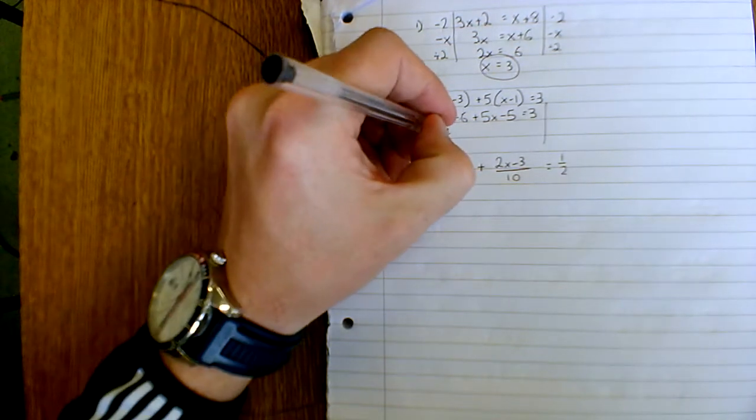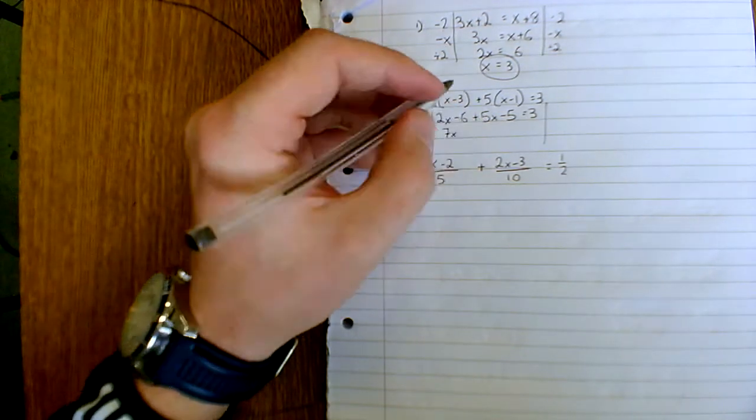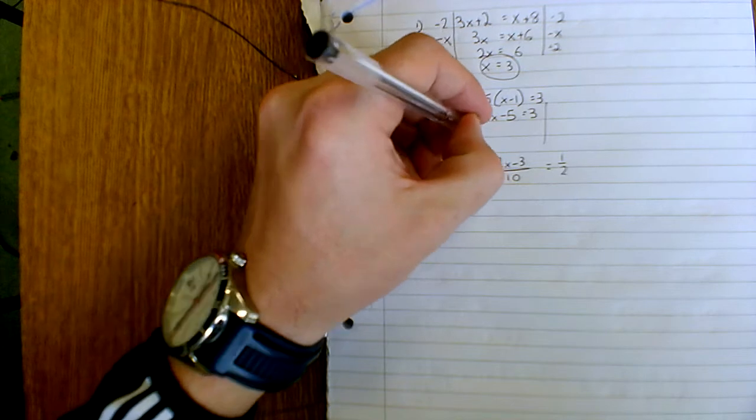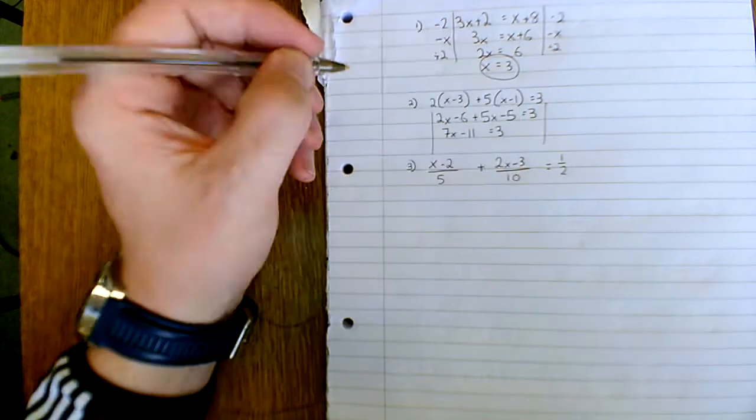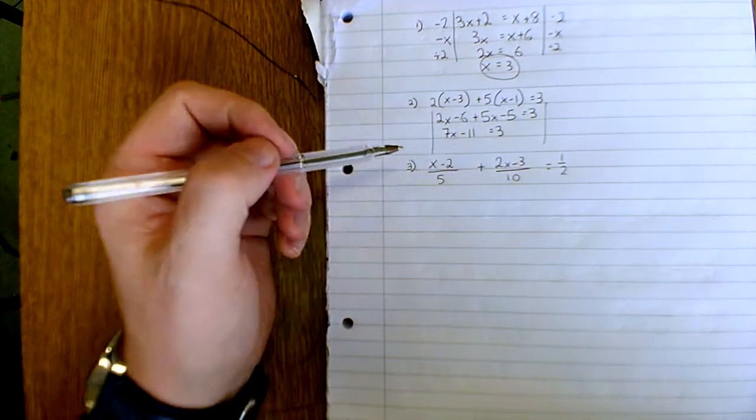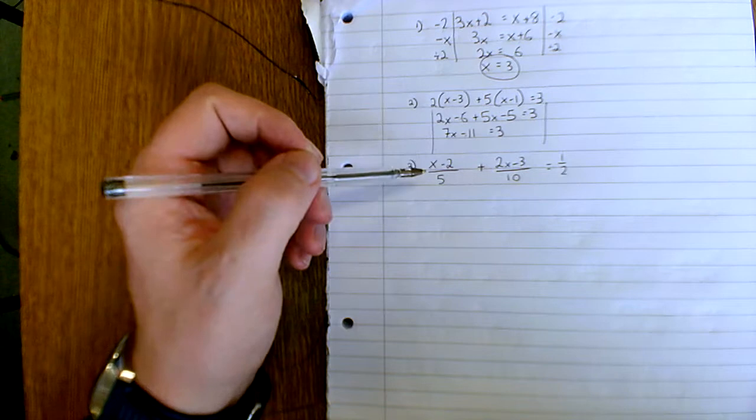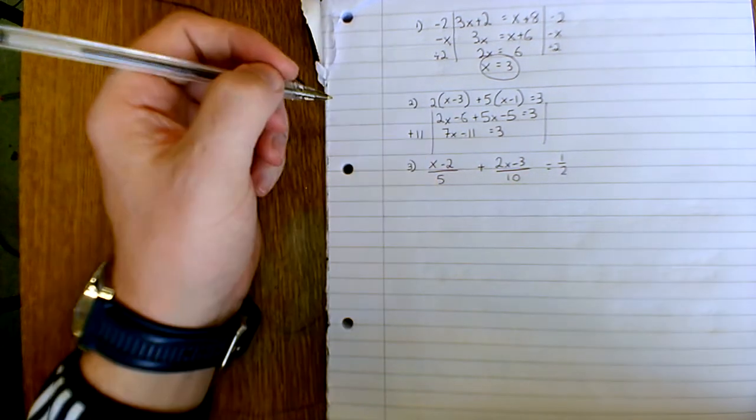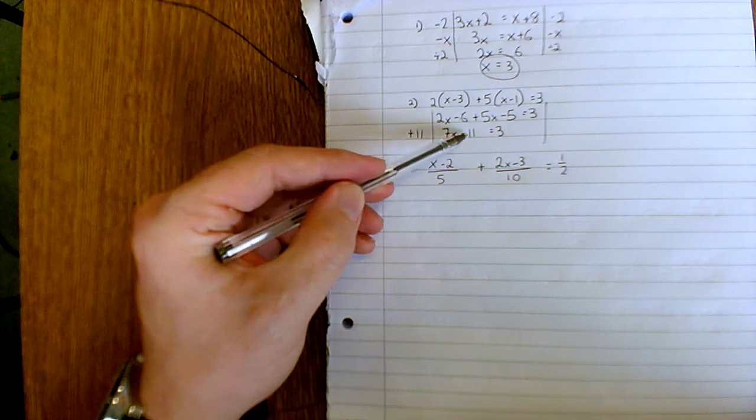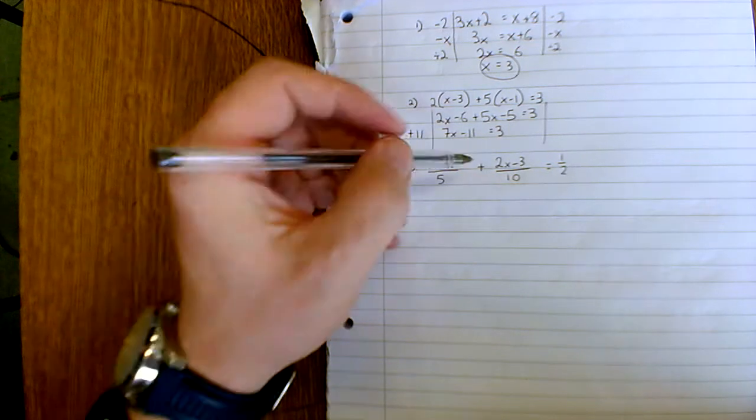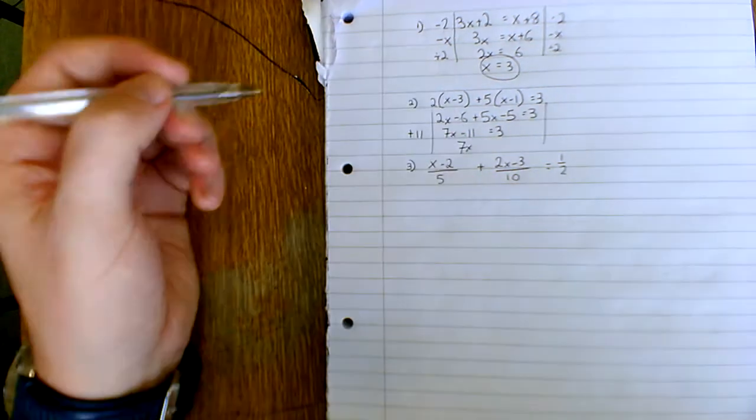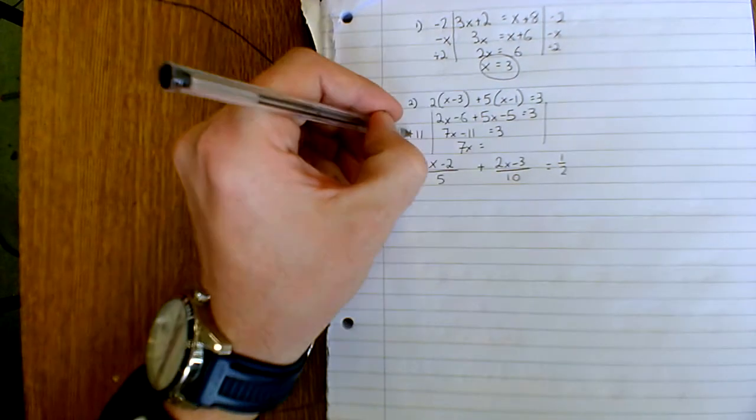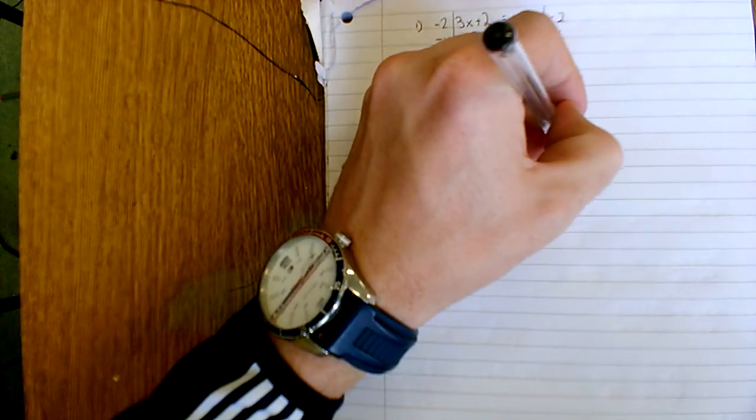2x plus 5x is 7x, minus 6 and minus 5 is minus 11, and that equals 3. So 7x minus 11 is 3. We want to get rid of this minus 11. We'll get rid of minus 11 by adding 11 to it. This way, 7x minus 11 plus 11 just leaves me with 7x.